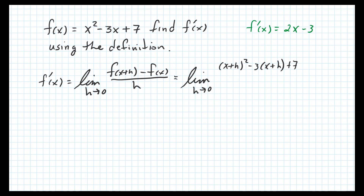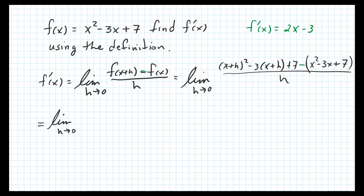So f(x+h) is x plus h squared, minus 3 times (x plus h), plus 7. Then minus f(x), which is x squared minus 3x plus 7 — and I want to put that in parentheses because I'll need to distribute the negative 1. All over h. Now we expand: squaring the binomial gives x squared plus 2xh plus h squared, then distributing negative 3 gives minus 3x minus 3h, plus 7.